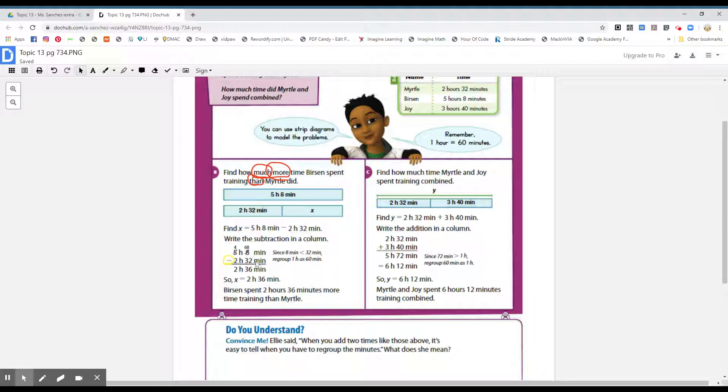So 68 minus 32, eight take away two is six, six take away three is three. And since you did regroup one hour, so four take away two is two hours. So two hours and 36 minutes, that's how much more time Burson spent training. And X is equivalent to two hours and 36 minutes. Burson spent two hours, 36 minutes more time training than Myrtle.